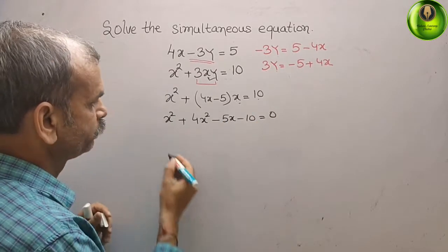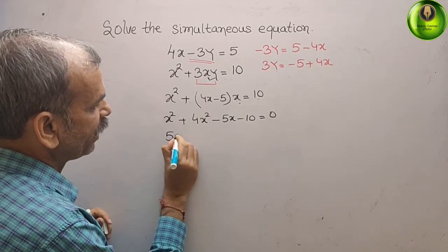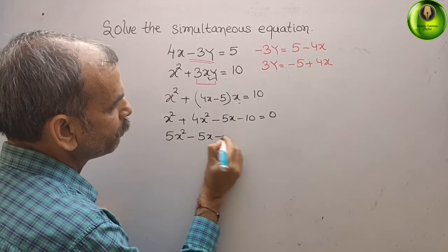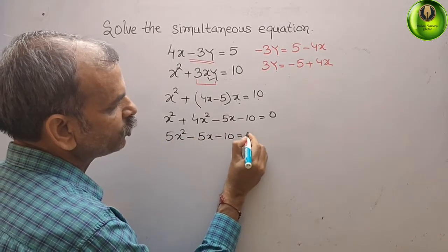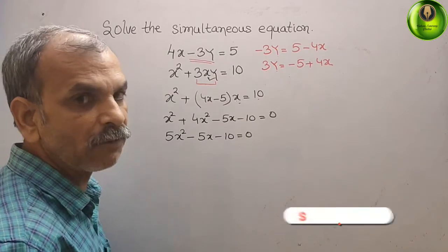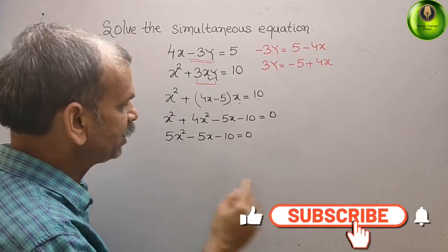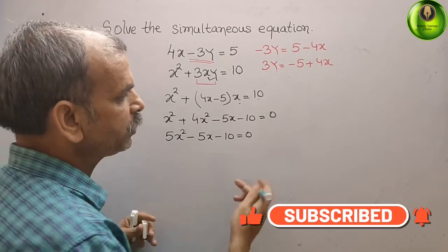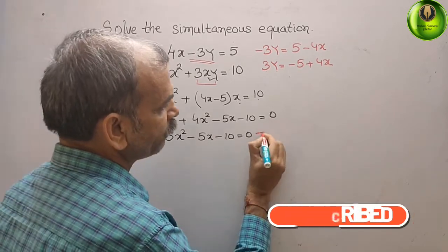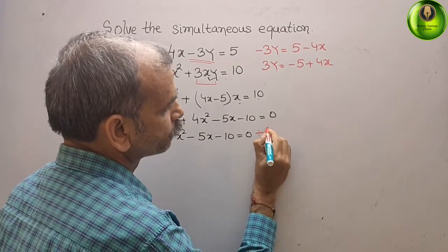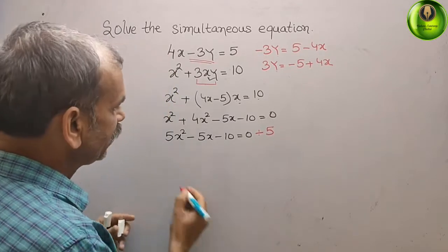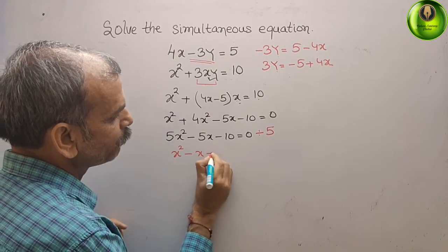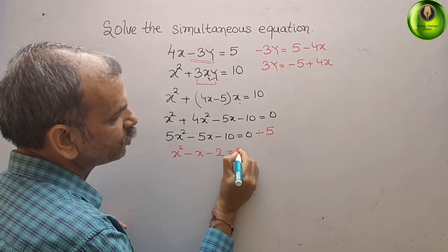This gives us 5x squared minus 5x minus 10 equals 0. Dividing every term by 5, we get x squared minus x minus 2 equals 0.